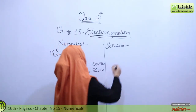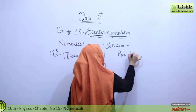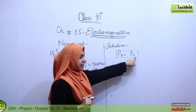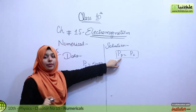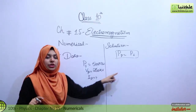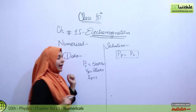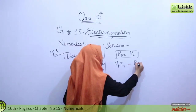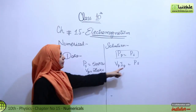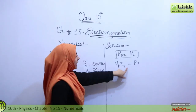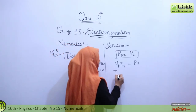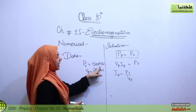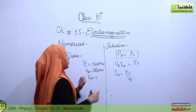Starting the solution: using the formula VP times IP equals PS. Since PS is given directly but the primary power is expressed as VP times IP, we substitute and rearrange to get IP equals PS over VP.